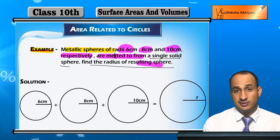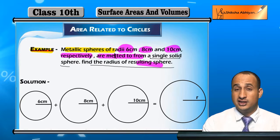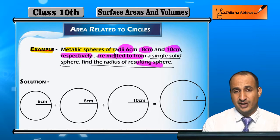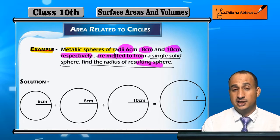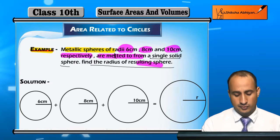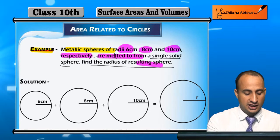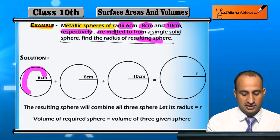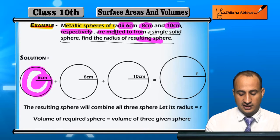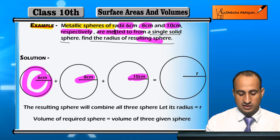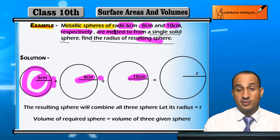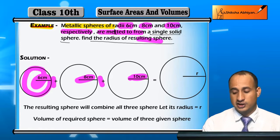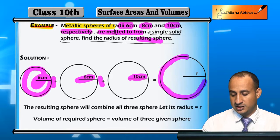We combine three solids to form a new solid shape. As you can see, there are three radii given: 6 cm, 8 cm, and 10 cm. We need to add their volumes together to find the radius of the resulting sphere.